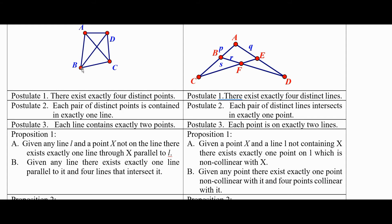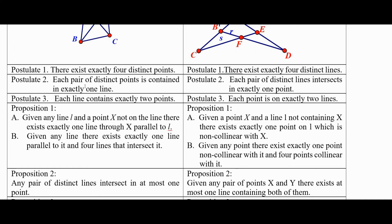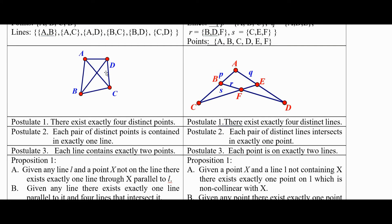Okay, how does that translate over here? It says given a line, a point X and a line not containing X, there exists exactly one point on L, which is not collinear, which is non-collinear with X.